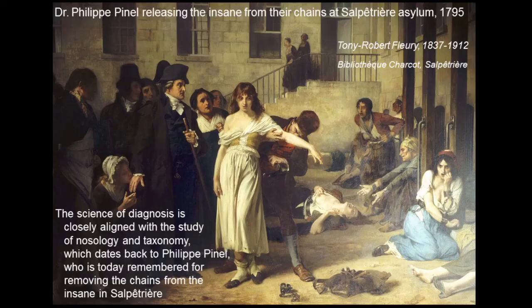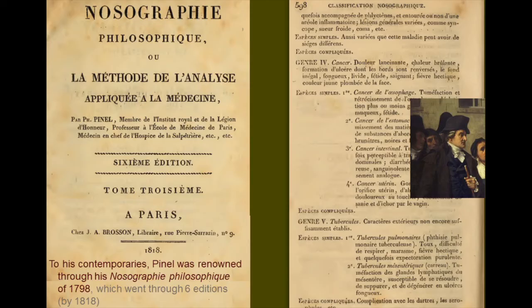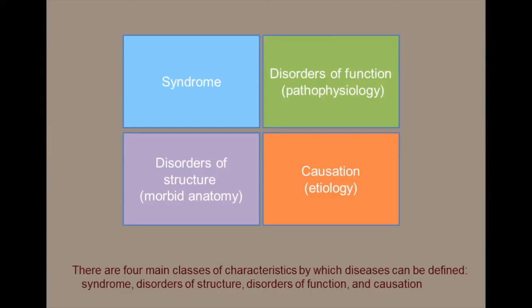The science of diagnosis is closely aligned with the study of nosology and taxonomy, which dates back to Philippe Pinel, who is today remembered for removing the chains from the insane at the Salpêtrière. To his contemporaries, Pinel was renowned for his book Nosographia Philosophica, published in 1798, which went through six editions. There are four main classes of characteristics by which diseases can be defined: syndrome, diseases of structure, disorders of function, and causation.